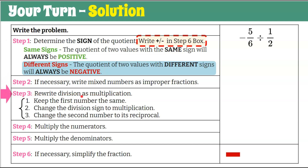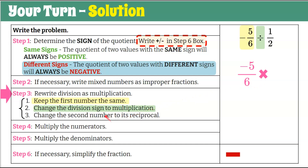Step three: rewrite division as multiplication. Keep the first number the same — negative five-sixths, keeping the negative sign with the numerator. Change the division sign to multiplication. Change the second number to its reciprocal: one-half flipped is two over one, noting that one-half times two equals positive one.